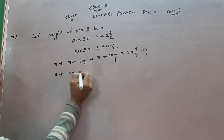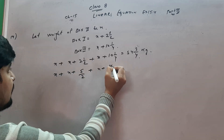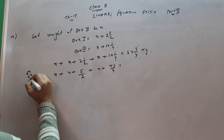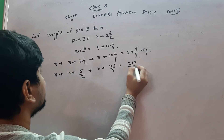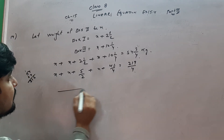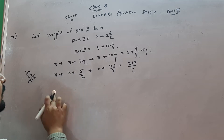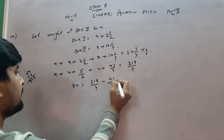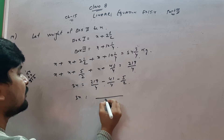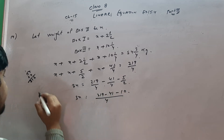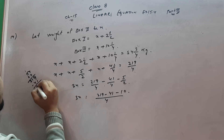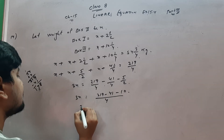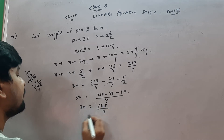Setting up the equation: x + (x + 5/2) + (x + 41/4) = 54 and 3/4, which is 219/4. Solving: 3x + 5/2 + 41/4 = 219/4. So 3x equals 219/4 minus 41/4 minus 10/4, giving 3x = 168/4.